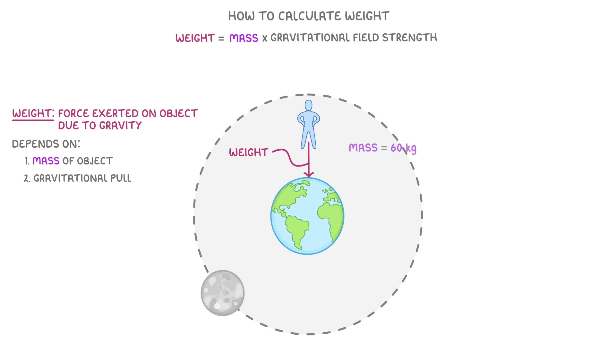For example, if a person with a mass of 60 kg was on Earth's surface, their weight—the force pulling them downwards towards the centre of the Earth—would be 60 times 9.8, so 588 N.